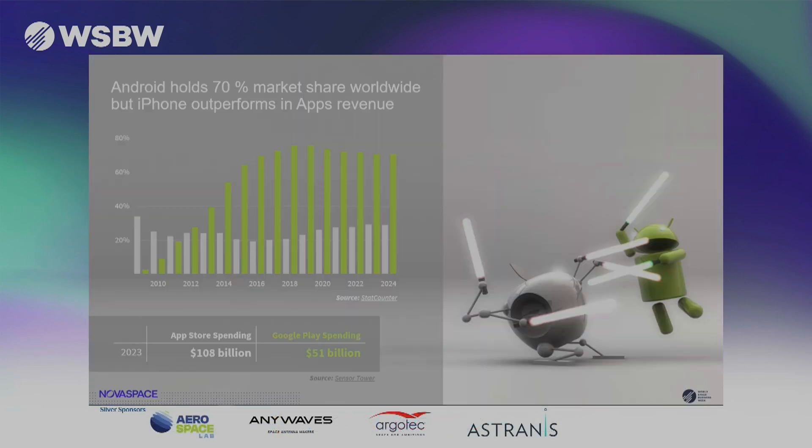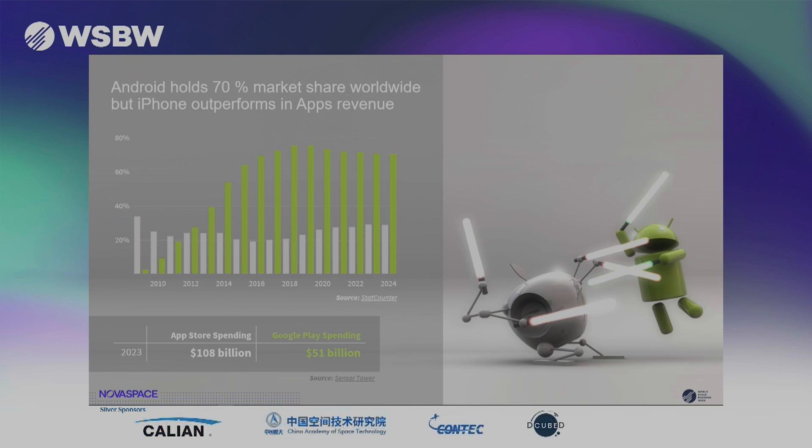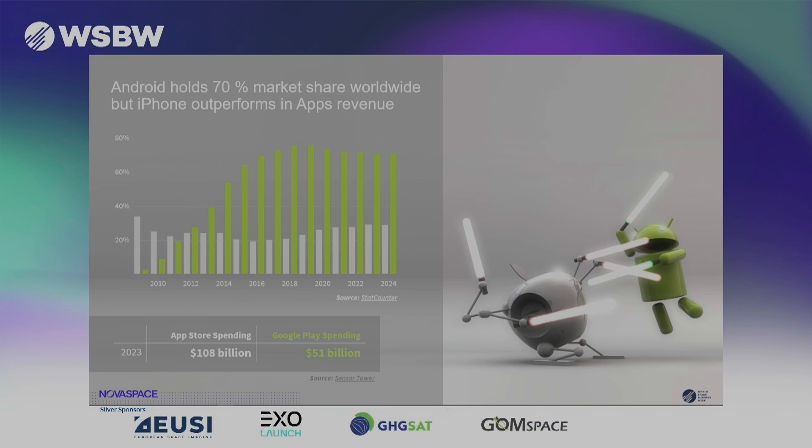And if you actually look at the market statistics, it's slightly different. It's about 70% of the global market share is with Android today. And as you can see on the charts, Apple obviously being the first coming to the market, but by 2012, already Android was the largest platform. Another way to measure commercial success is looking at the app revenues — in that case, Apple outperformed Android by a factor of 2 to 1.